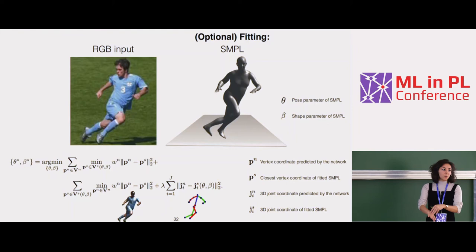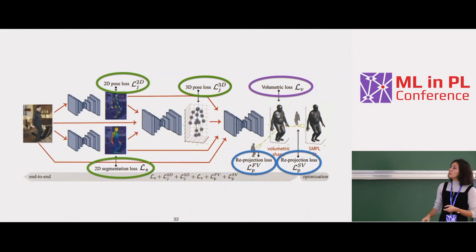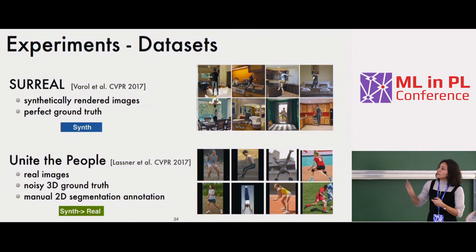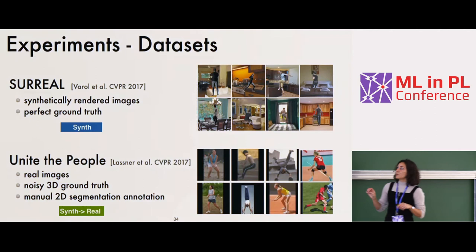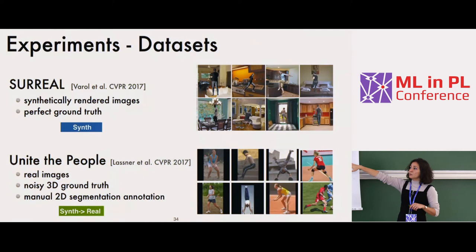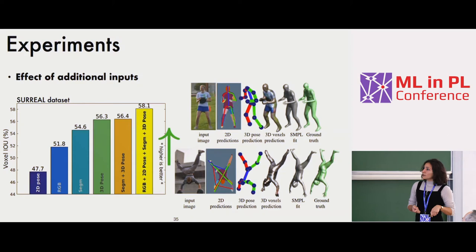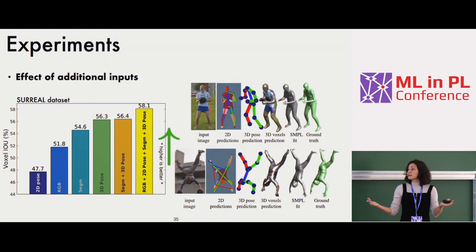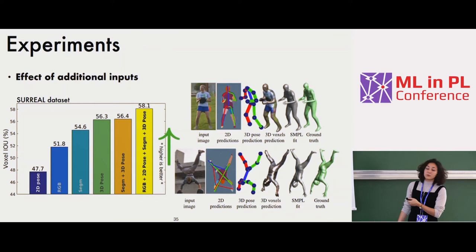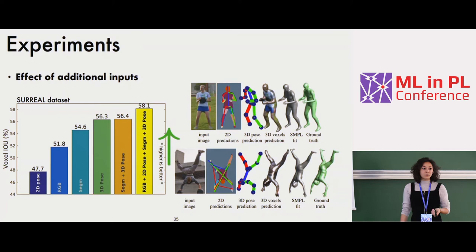We perform experiments on the previously shown synthetic SURREAL dataset and a new one, United People, which has real images with semi-automatic ground truth. The first check is whether we need the stacked network with different tasks — we see that the more intermediate inputs you provide to the shape estimation stage, the better the performance. This is intuitive: if one task fails but another succeeds, you can recover from mistakes. The connected BodyNet architecture is clearly better.